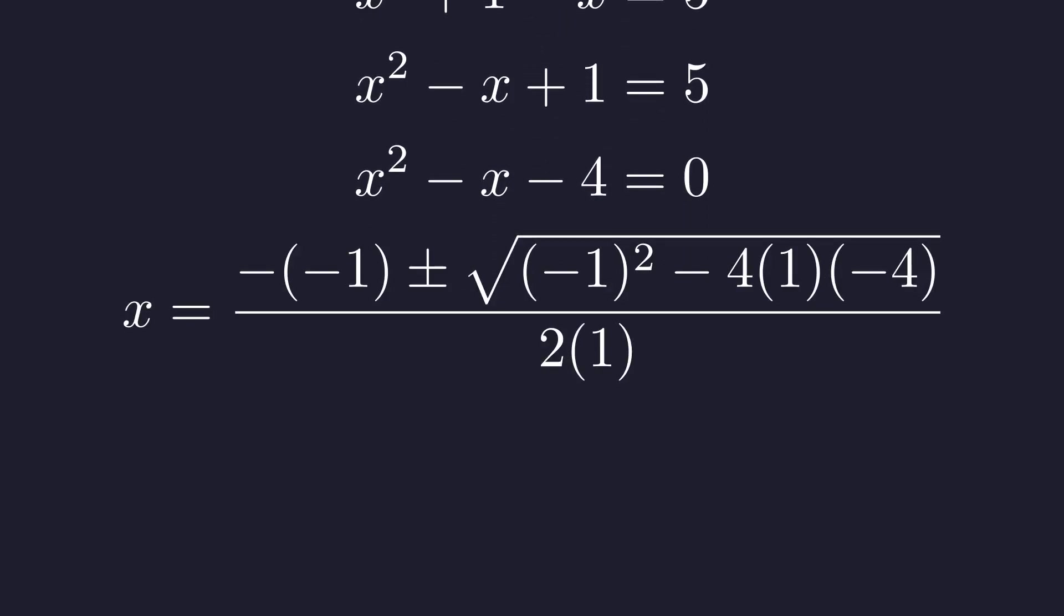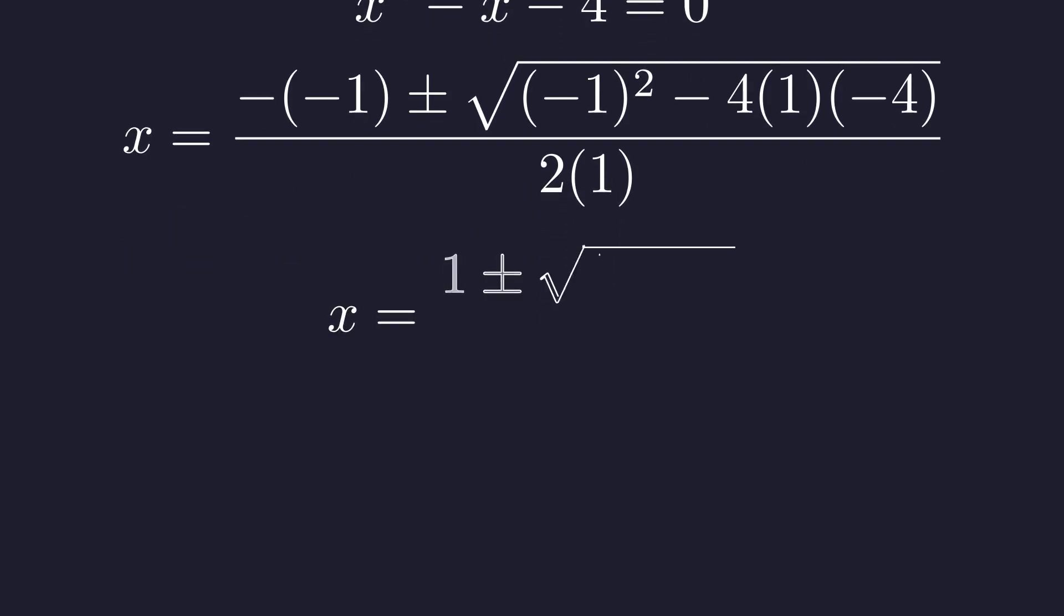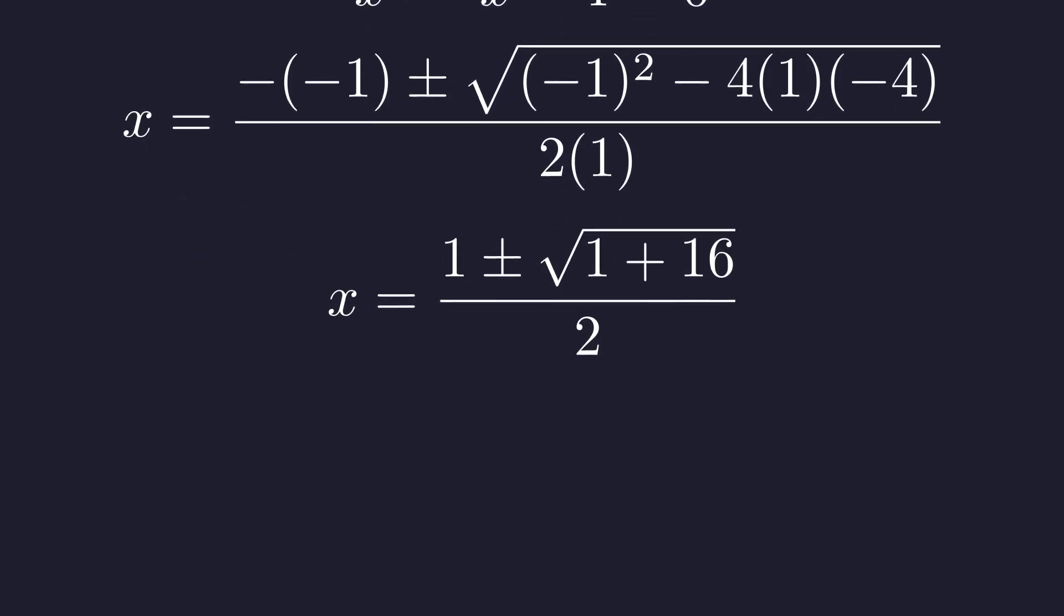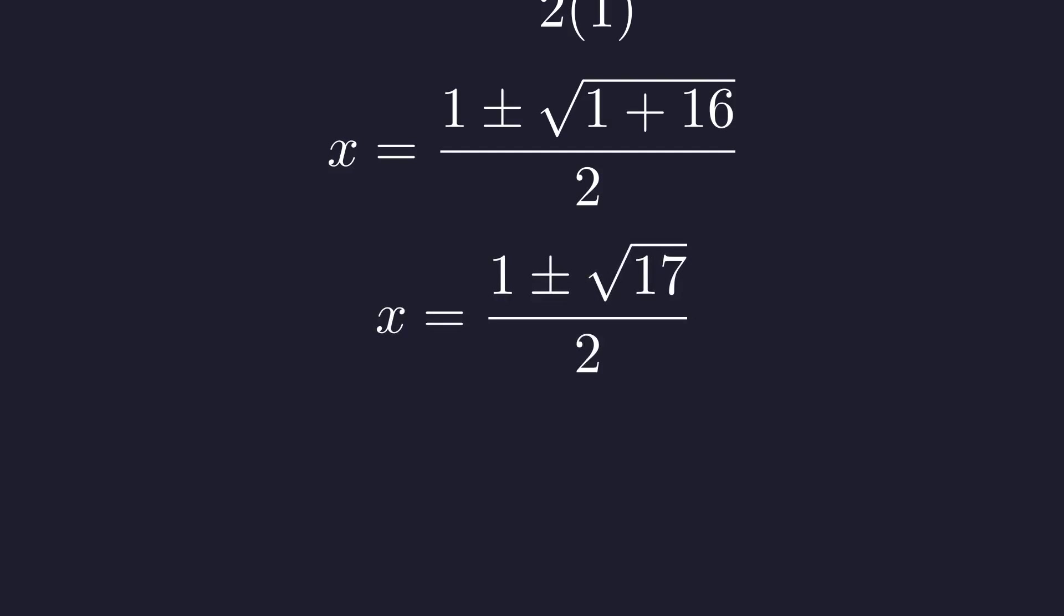We apply the quadratic formula with a equals 1, b equals negative 1, and c equals negative 4. Simplifying inside the radical, this gives us two more potential solutions.